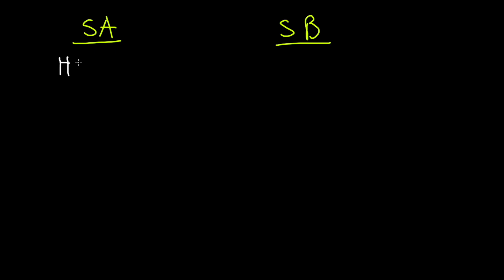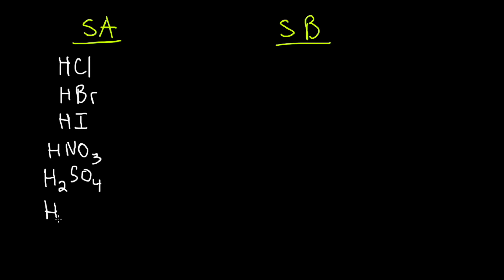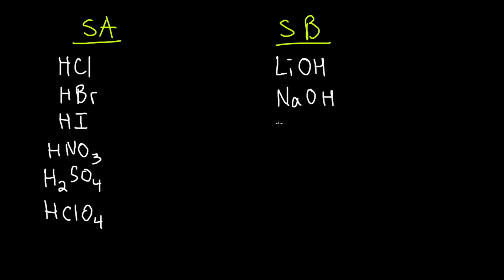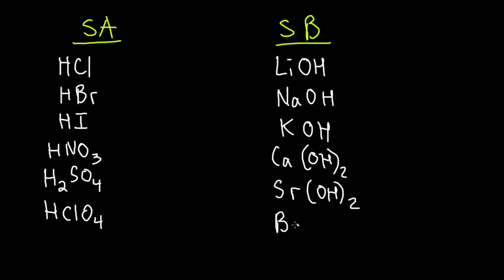For strong acids, we have HCl (hydrochloric), hydrobromic, hydroiodic, HNO3, H2SO4, and HClO4. These are the six strong acids in nature. And there are six strong bases: KOH, calcium hydroxide, SrOH, and BaOH. These are the ones you should memorize. If you see any other acid or base, it will be considered weak.